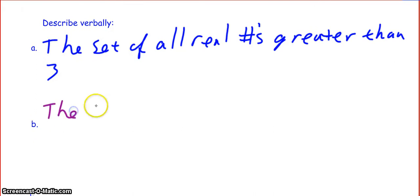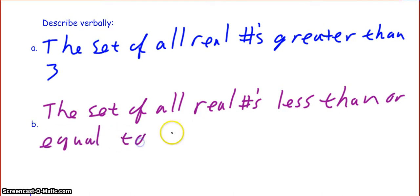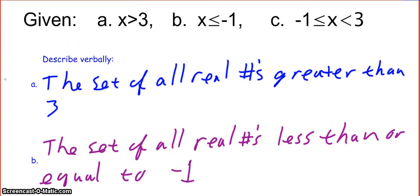For B, we would say: the set of all real numbers less than or equal to negative 1. And this may seem kind of tedious to you — like, why do I need to do this? Well, it's really important when you're trying to learn something, and this is true for any topic, to be able to write it out. It actually gives you a better understanding. When we say x is greater than 3, it means we're talking about real numbers — all of them that are larger than 3. We use the word 'set' because it is a group of all those numbers, an infinite amount, so we can't actually list it.